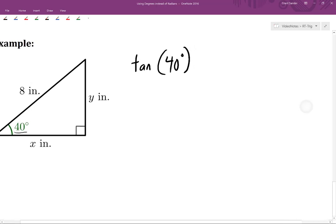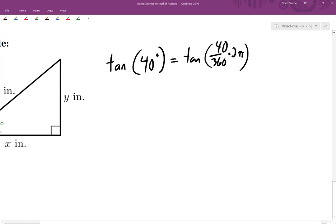So we would have to convert this 40 degrees into a number of radians. 40 degrees is 40/360ths of a full rotation. We know that there's 2π radians in one full rotation.